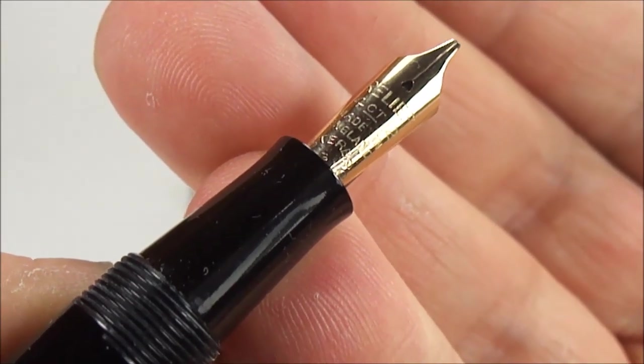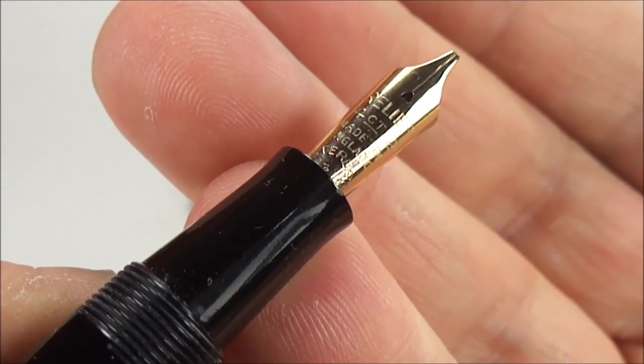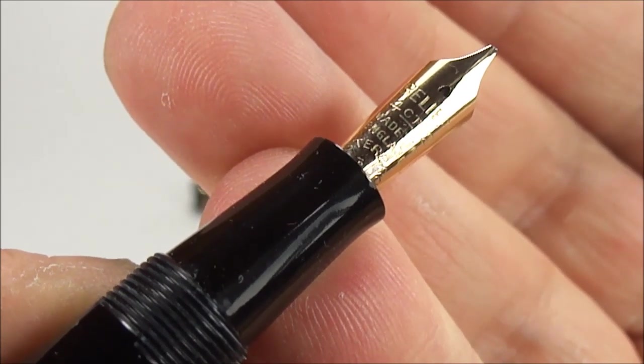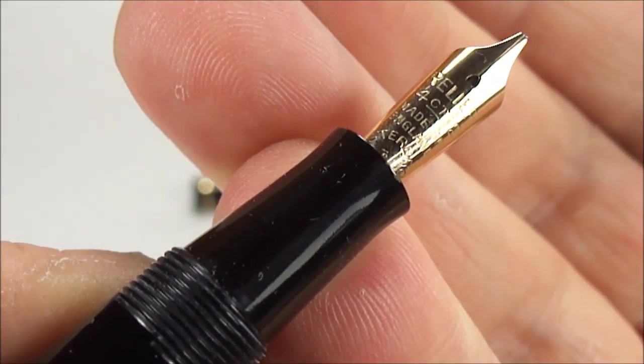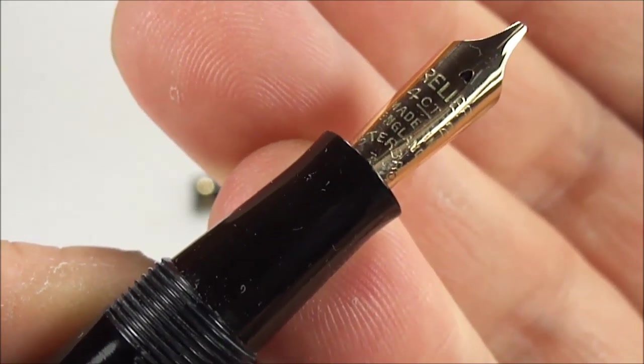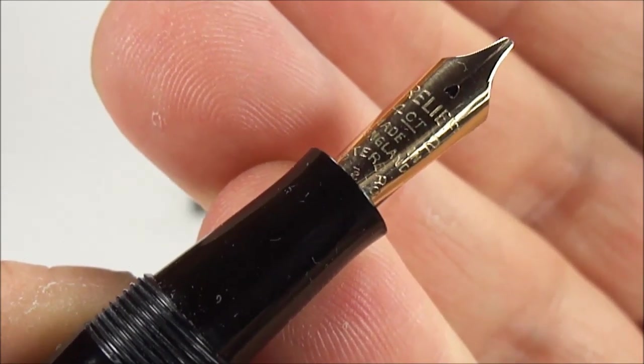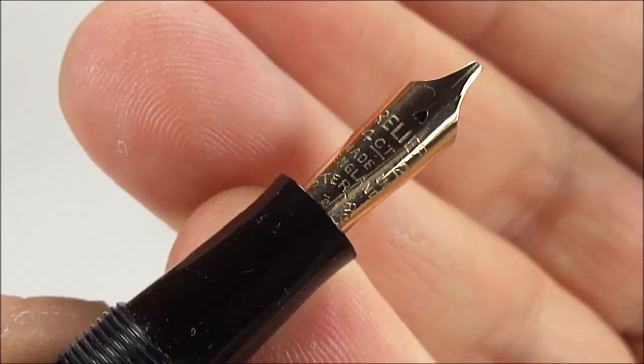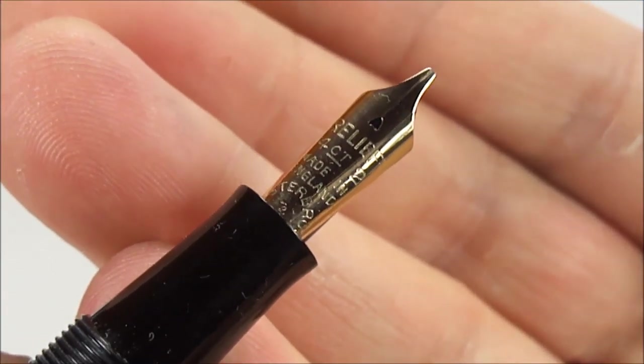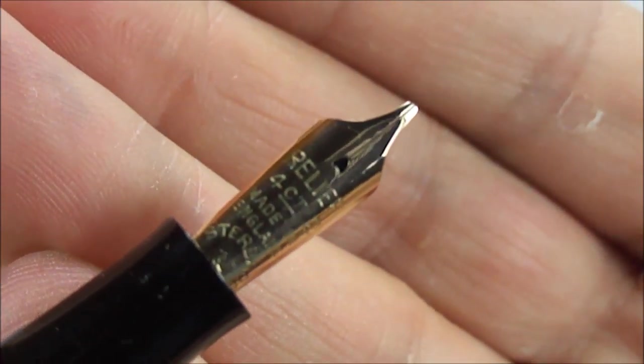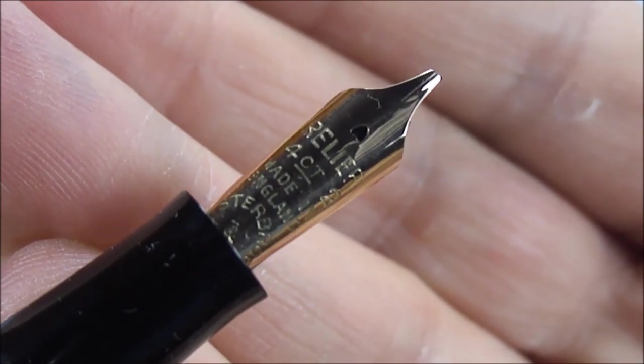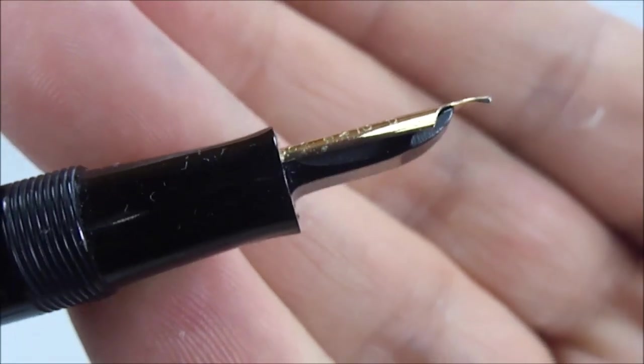If we show you the nib here, I need to keep it very still. What we have on the nib, it actually says Relief 14 carat No. 2, and then underneath it has Made in England, and then underneath that it has Esterbrook and Company to the very bottom. So a very nice nib. These particular nibs are supposed to be renowned for nice writers. The Relief I believe tells us that the nibs are actually oblique. You can see we've got a slight oblique to the very tip of the nib there.